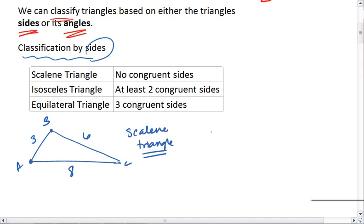If, however, we have a triangle that has two congruent sides, then this triangle is called an isosceles triangle.